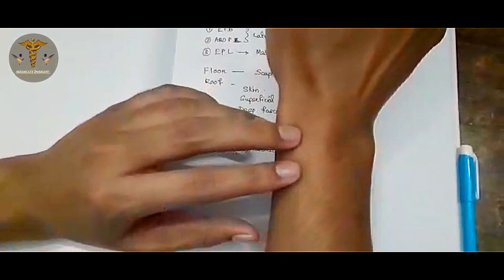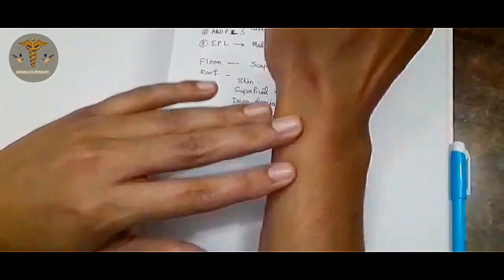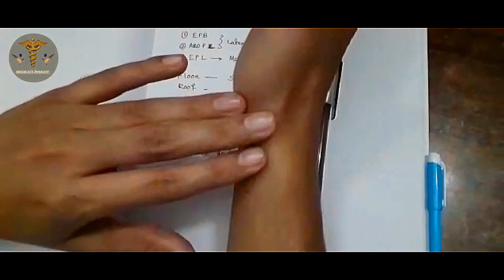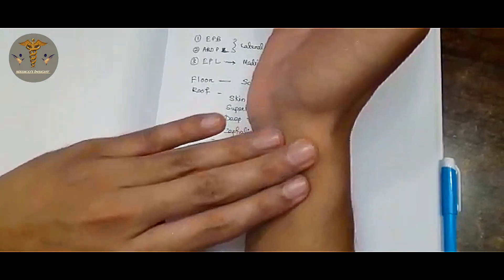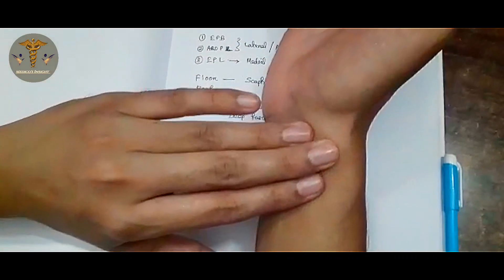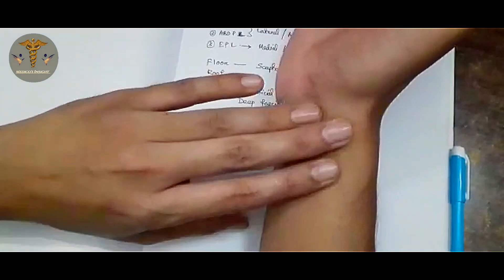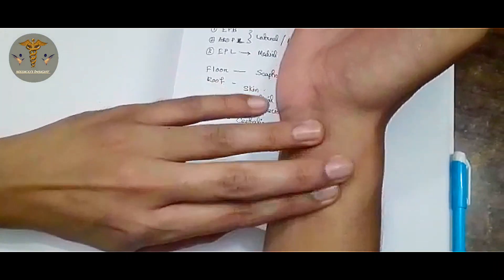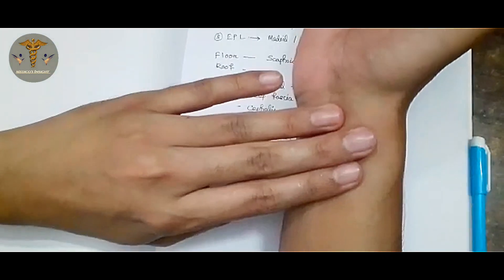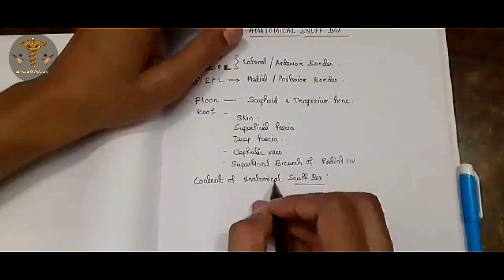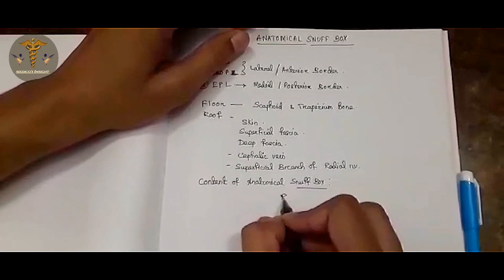The main content of the anatomical snuff box is the radial artery. We can palpate the radial artery by pressing it with three fingers against the scaphoid bone, and we can clearly palpate the pulse of the radial artery.